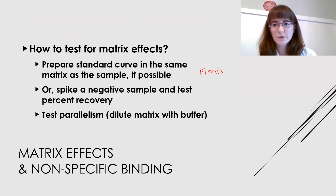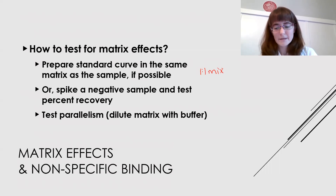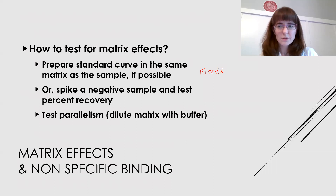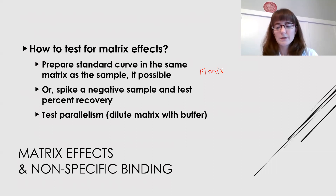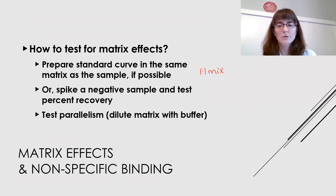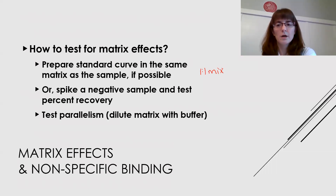Another way to test whether matrix effects are a problem is to spike a known amount of your analyte into a negative sample and test your recovery. This is a measurement of accuracy — if there are no matrix effects you get the same result in your sample as you would in buffer. If it's a different result, you know that there's a matrix effect. You can also test parallelism, where you take a sample and dilute it repeatedly with buffer to look for any suppression happening from the matrix.